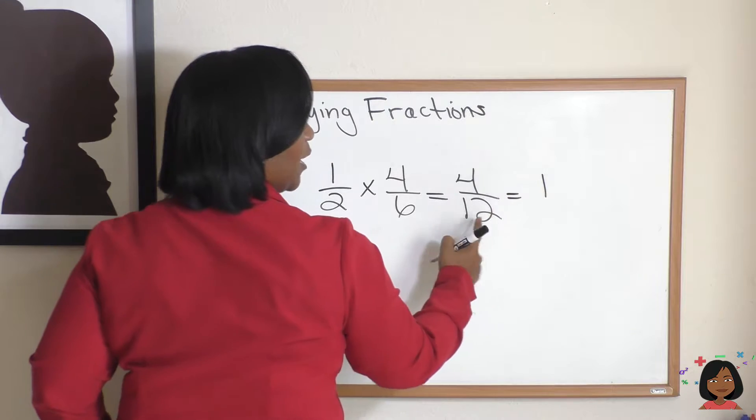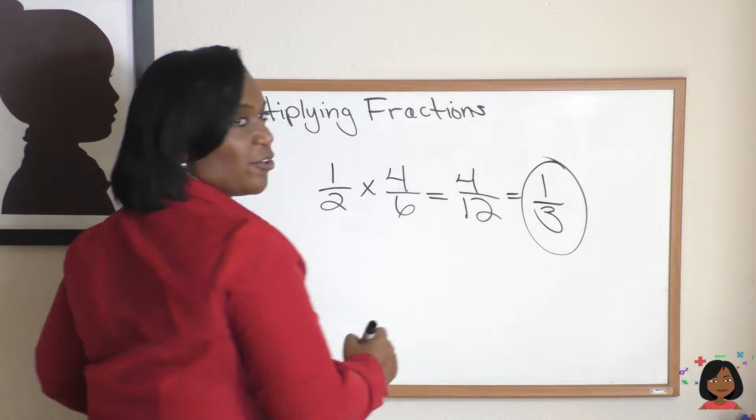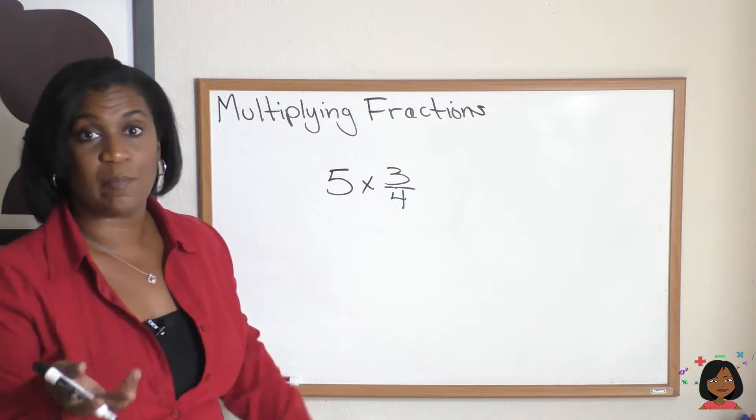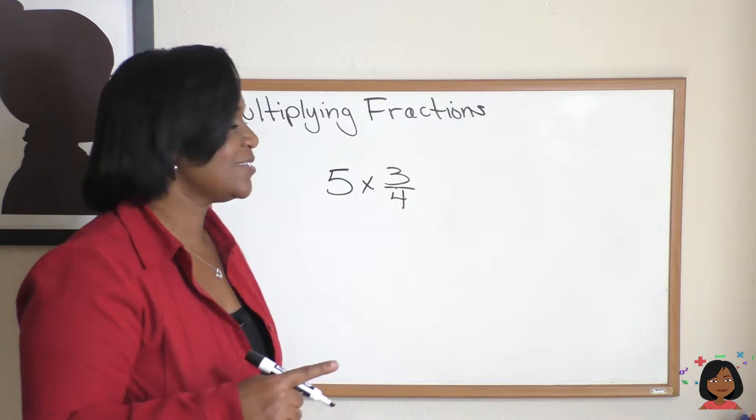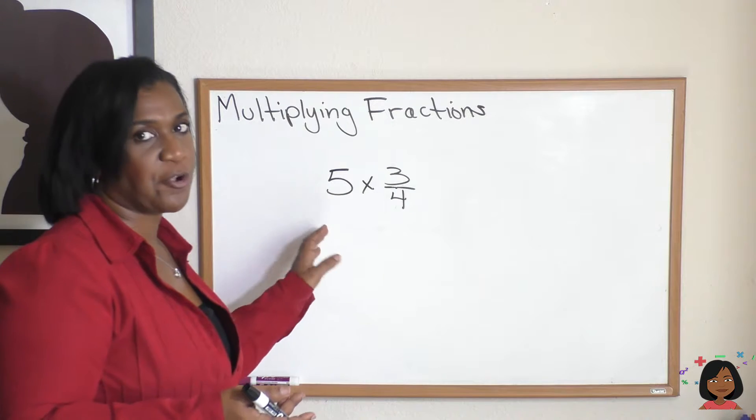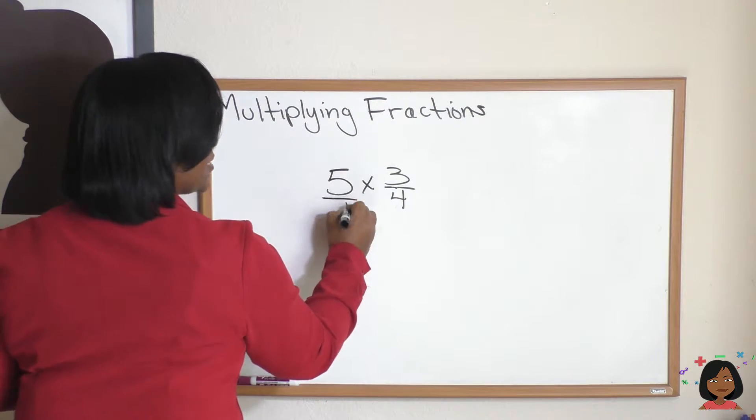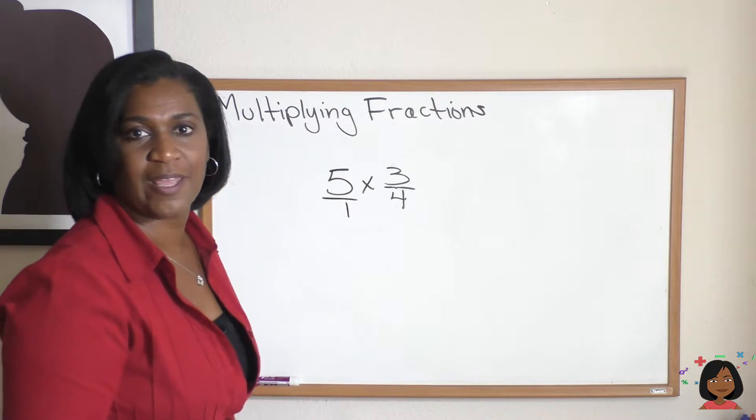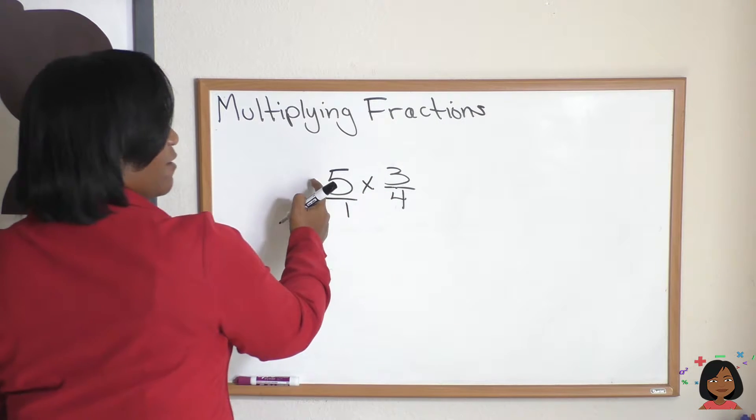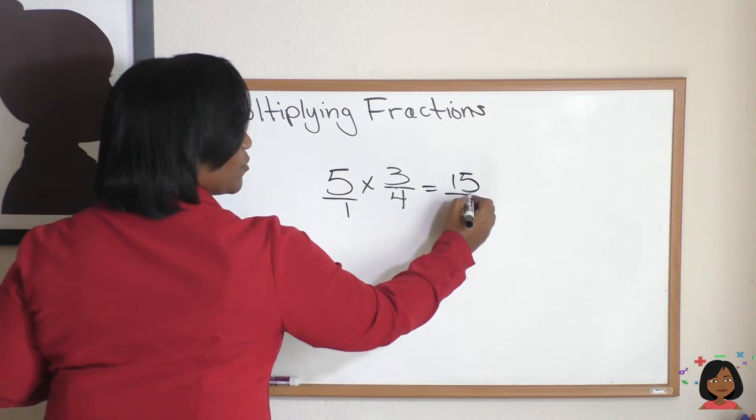What about multiplying a whole number times a fraction? Well, isn't a whole number the same thing as saying that number over one? Really, because five is just five over one. So if you need to see it, feel free to put that one in, and now just continue multiplying across. Numerator times numerator, five times three equals fifteen. One times four equals four.